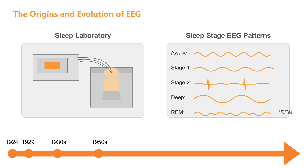Meanwhile, EEG also made major breakthroughs in sleep research. In the 1950s, scientists Eugene Aserinsky and Nathaniel Kleitman discovered rapid eye movement, REM, sleep through EEG for the first time. This discovery not only revealed that sleep has different structural stages, but also provided a scientific basis for studying dreams and states of consciousness. For the first time, we could objectively observe and study human sleep processes, rather than relying solely on subjective reports — an important leap from simply dreaming to scientifically interpreting dreams.